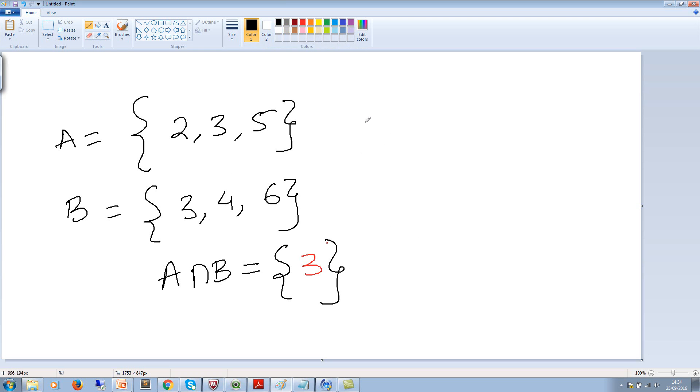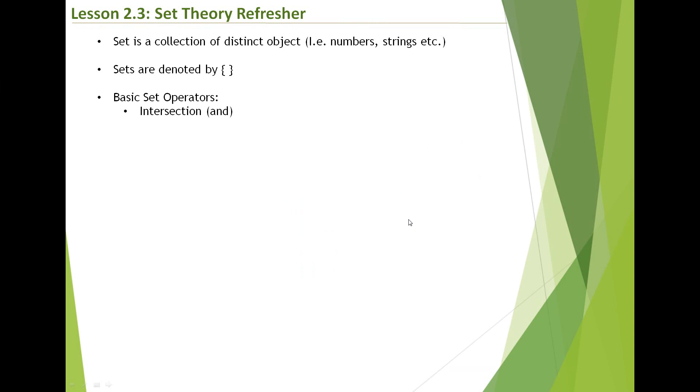If we wanted to show the same thing in a Venn diagram, let me just write this down as well. So this is A, this is B, and we are talking about A intersection B. If you really see, the common values between A and B are 3. So 3 would come here, and we have 2 and 5 in here, and then we have 4 and 6 in here. I hope that makes sense, it's fairly straightforward.